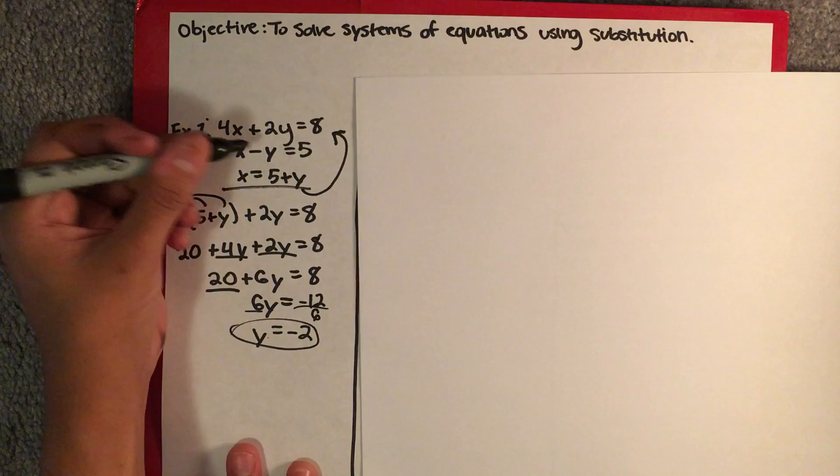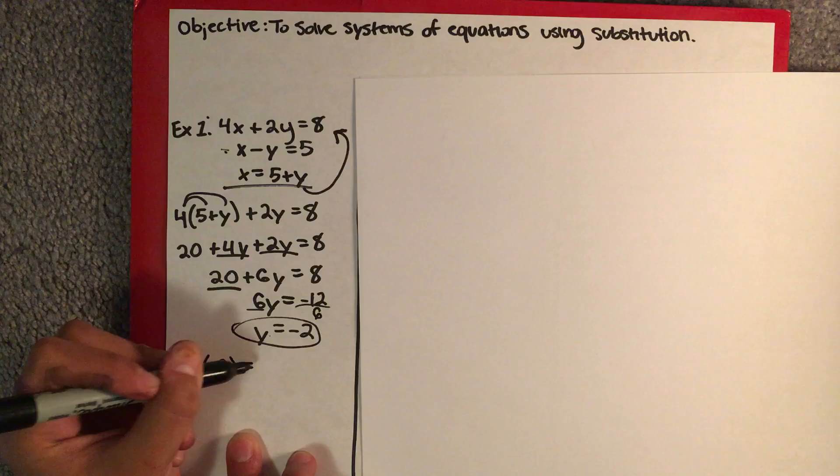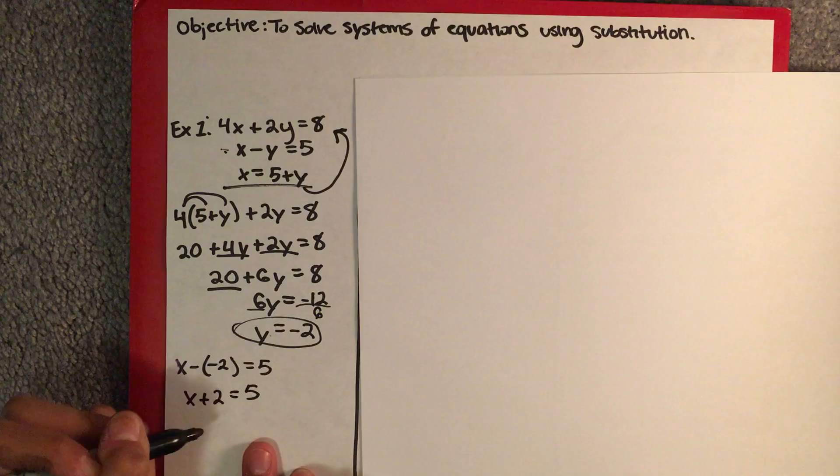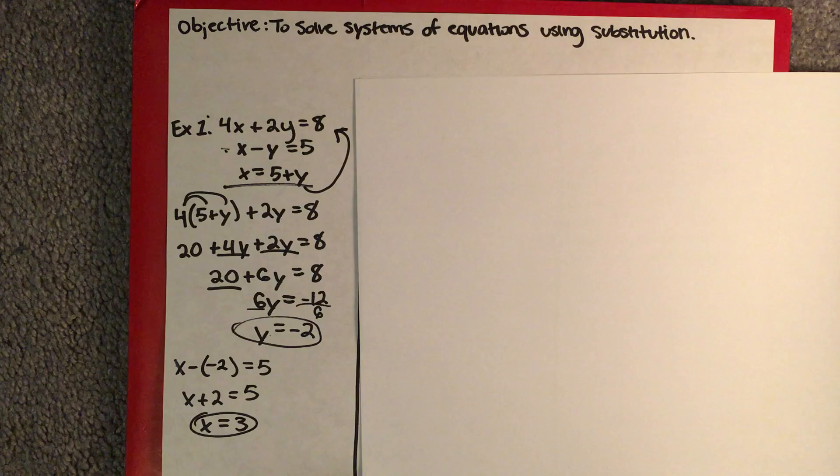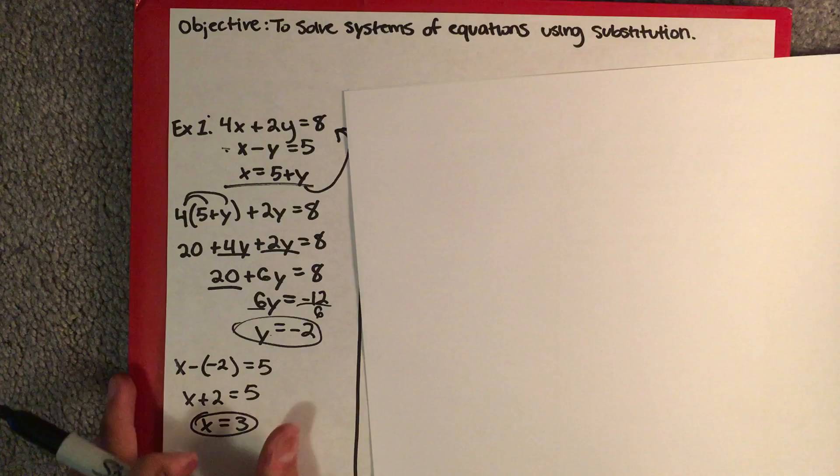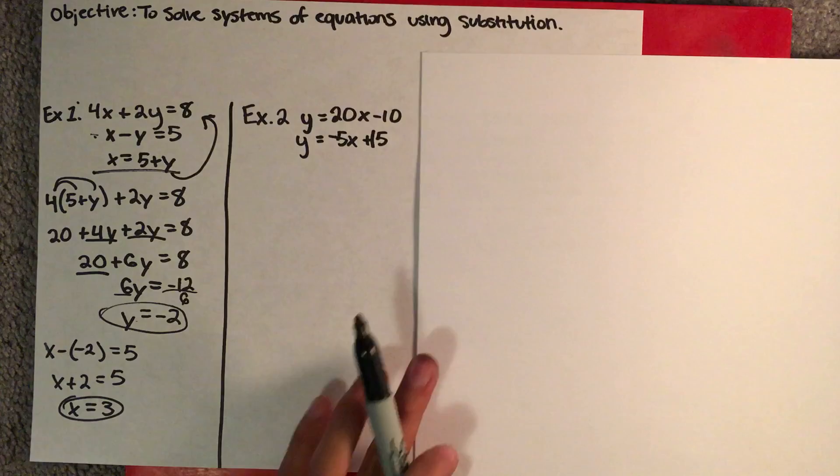As soon as you find your y, you plug it into either one of your original equations to get your x. So you have x minus negative 2 is equal to 5, which gives you x plus 2 is equal to 5, and your x equals 3. And that is your first way to solve a system of equations using substitution.